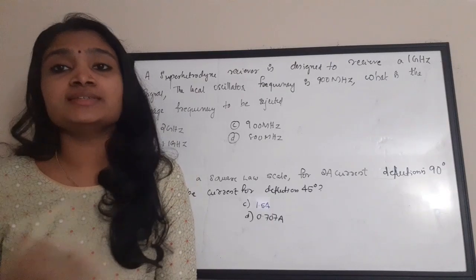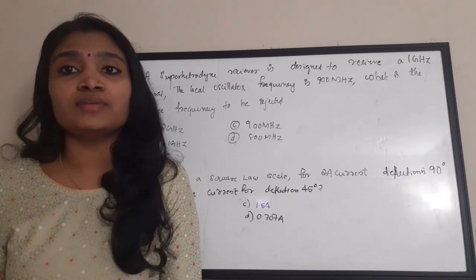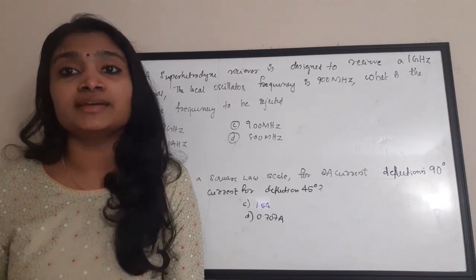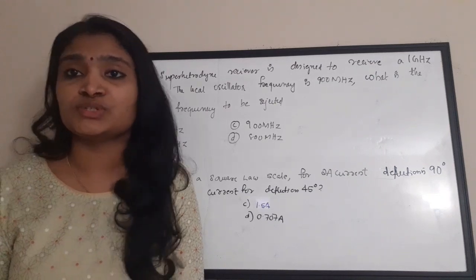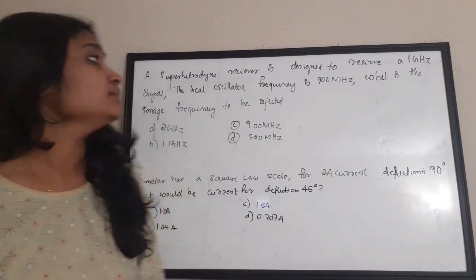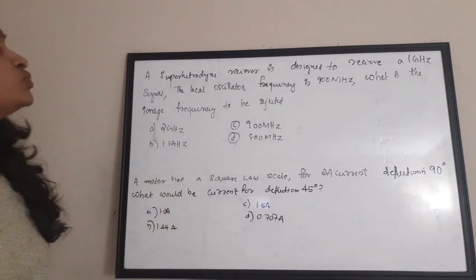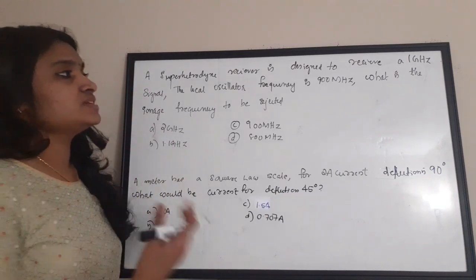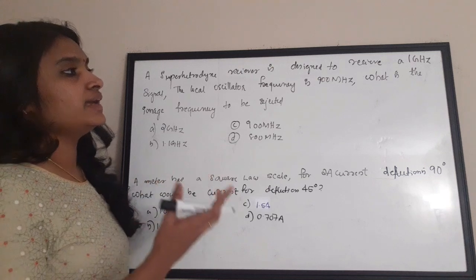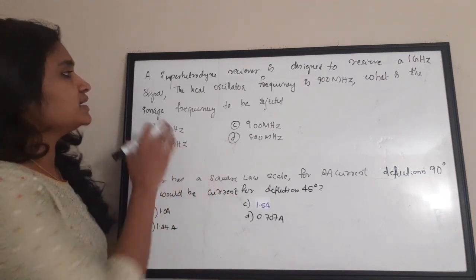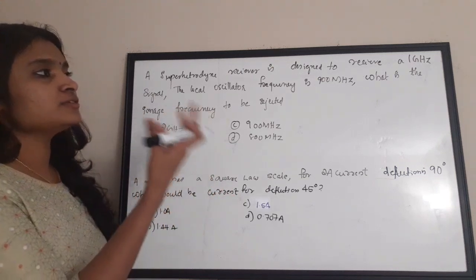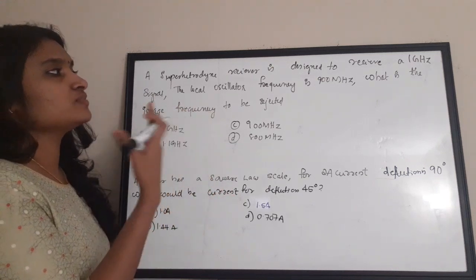This is Part 5 of NESAC ISRO Technical Assistance Solutions. The first question: a super heterodyne receiver is designed to receive a 1 gigahertz signal.